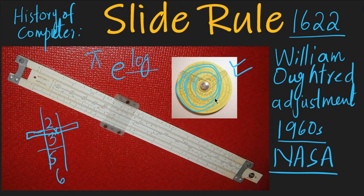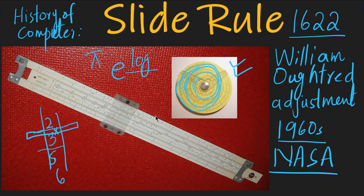This is the next machine which helped in our calculations. We have not reached computers nor any calculator yet — remember that this is not a calculator. Calculations are not happening here; this is only for adjustment. In the Napier Bones, slide rule, and abacus, we see these 3 popular machines in the history of the computer.